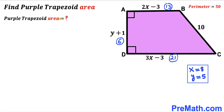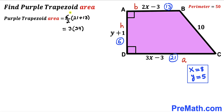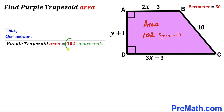Now we calculate the area of the purple trapezoid. The area formula is: Area equals height h times (a plus b) divided by 2. Our height h is 6, base a is 21, and base b is 13. So Area equals 6 divided by 2 times (21 plus 13) equals 3 times 34 equals 102 square units. The area of this purple shaded trapezoid is 102 square units.